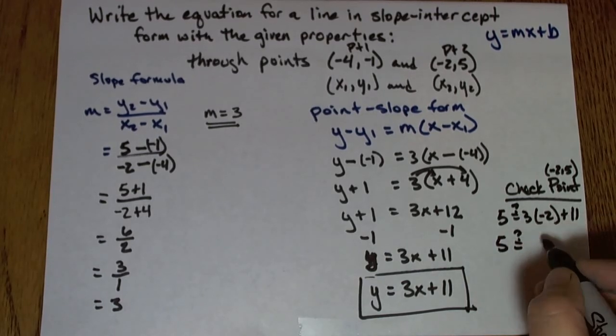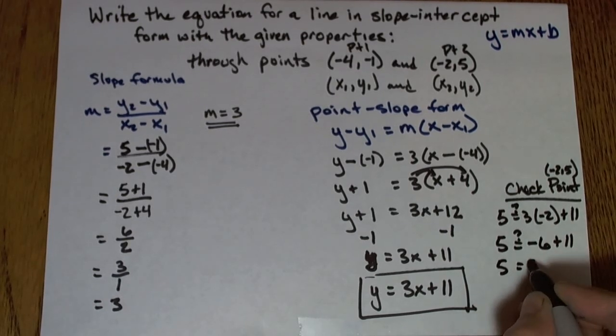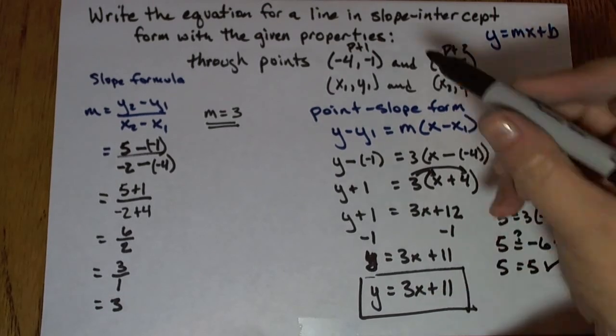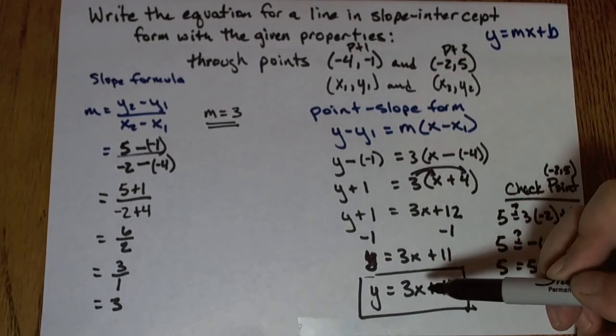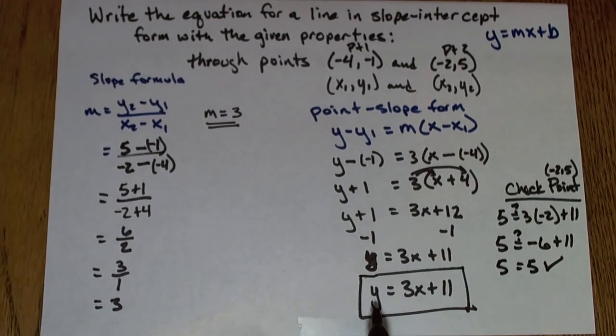Seeing if the two sides are equal, negative 6 plus 11. I'll end up with 5 equals 5. So my point checked in as a solution to this equation. I could also check my other point in and make sure it was a solution if I had the time and wanted to. But at this point I feel pretty good about my answer, y equals 3x plus 11.